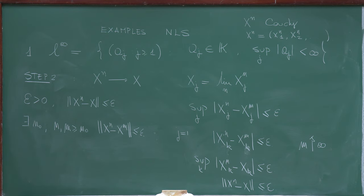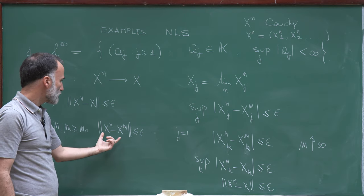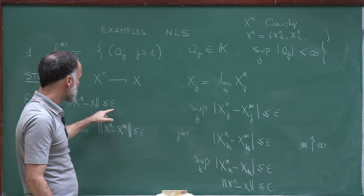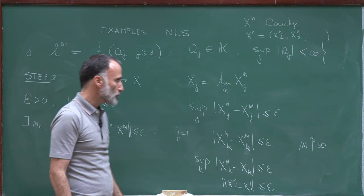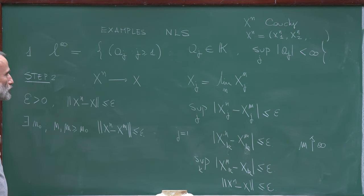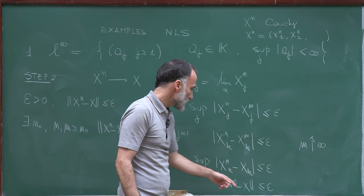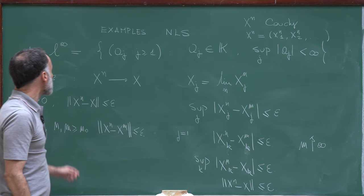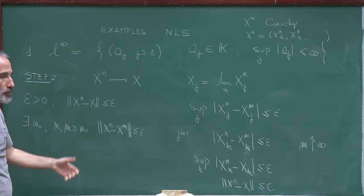We proved that the norm of xn − x is bounded by epsilon for all n larger than n₀, which is exactly what we wanted to prove. So the sequence xn converges to x, and therefore the space L∞ is complete for that norm.